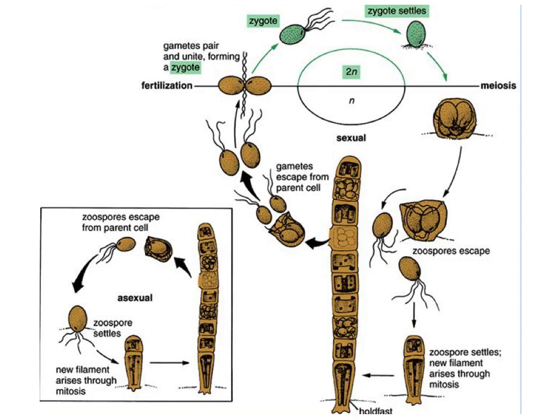In its vegetative form of reproduction, the filament breaks up into a number of parts, and each part is capable of developing a new plant like its parent. During asexual reproduction, as you can see in the bottom left box in this diagram, flagellated zoospores break free from the parental cell and attach to a suitable substrate, which then grows into new clonal populations. These zoospores can survive for long periods of time in plankton, and as a consequence they can travel long distances and spread.